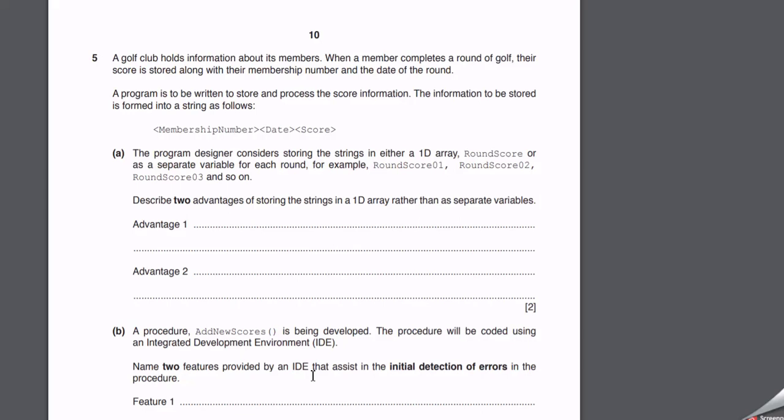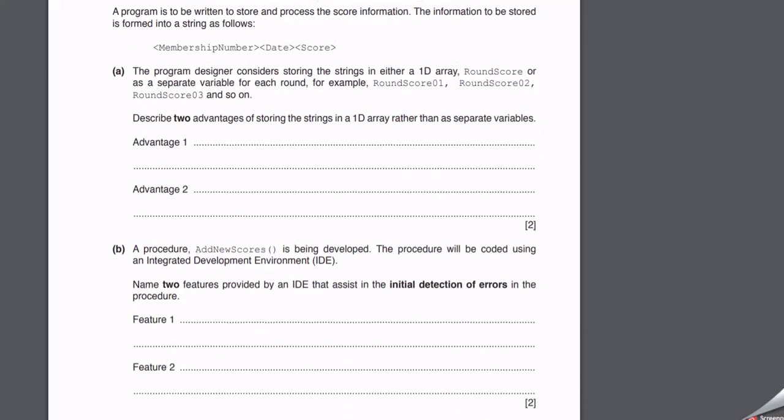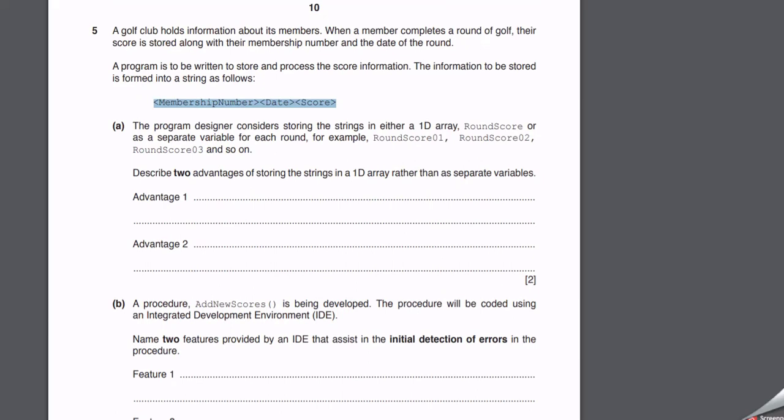Okay, so I'm not going to have you do the whole question. We'll just be focusing on the programming. We have a golf club that holds information about its members. When a member completes a round of golf, their score is stored along with their membership number and the date of the round. The information will be stored with a membership number followed by the date followed by the score, and it looks like it's all going to be on one line. So far it doesn't tell us how many characters are going to be in the membership number, nor does it tell us how to store the data.